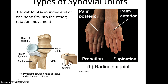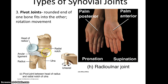Pivot joints have a rounded end of one bone that fits into another and allows for a rotational type of movement. The best example is the pivot joint found between the head of the radius and the radial notch of the ulna, which allows for supination and pronation.